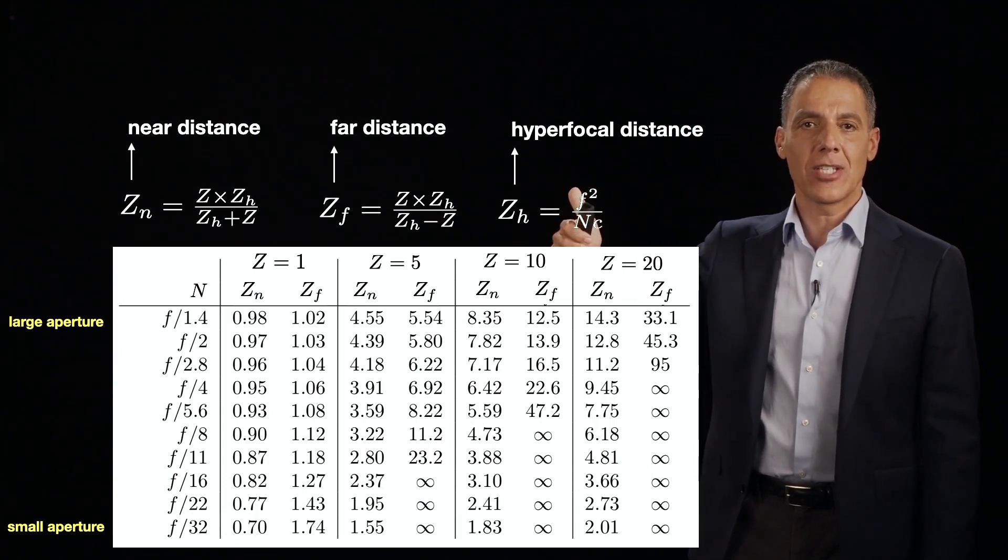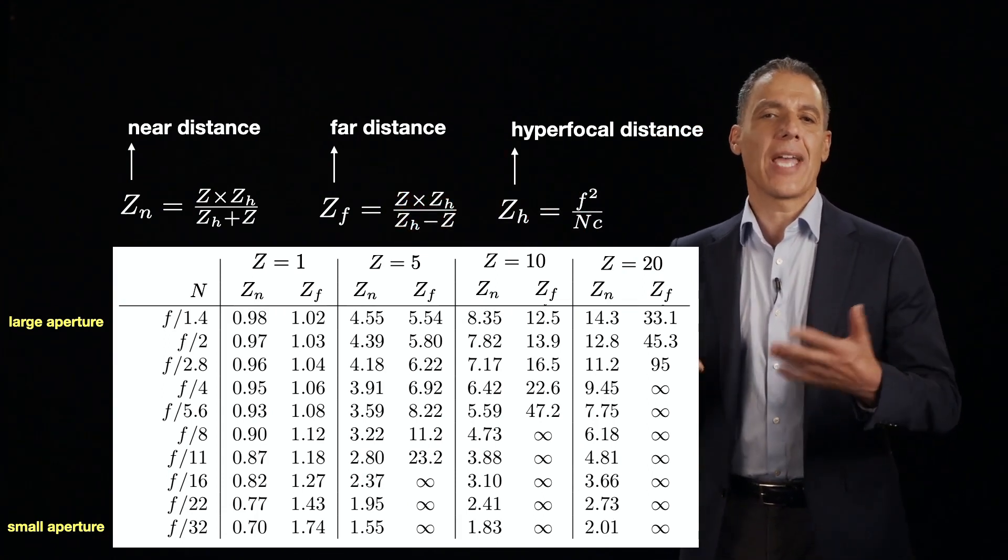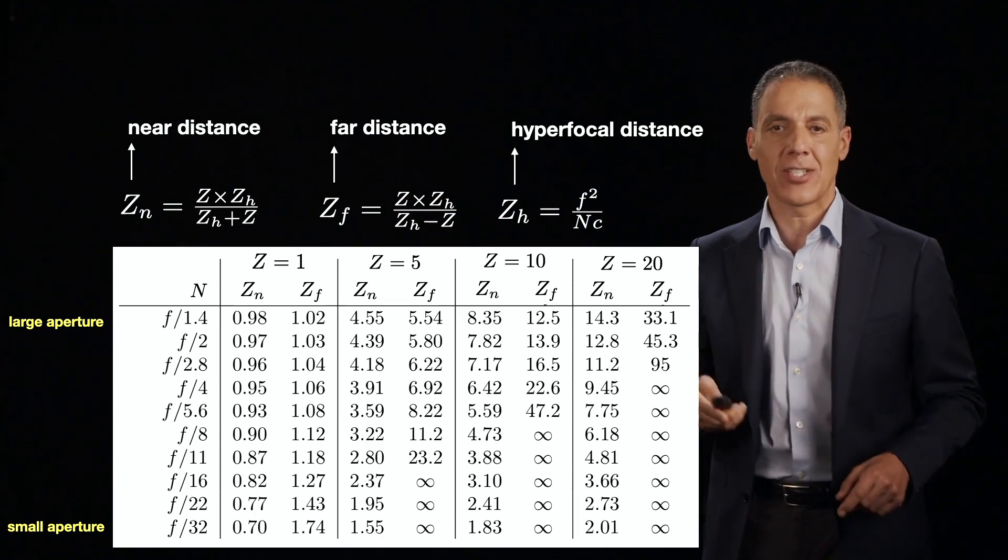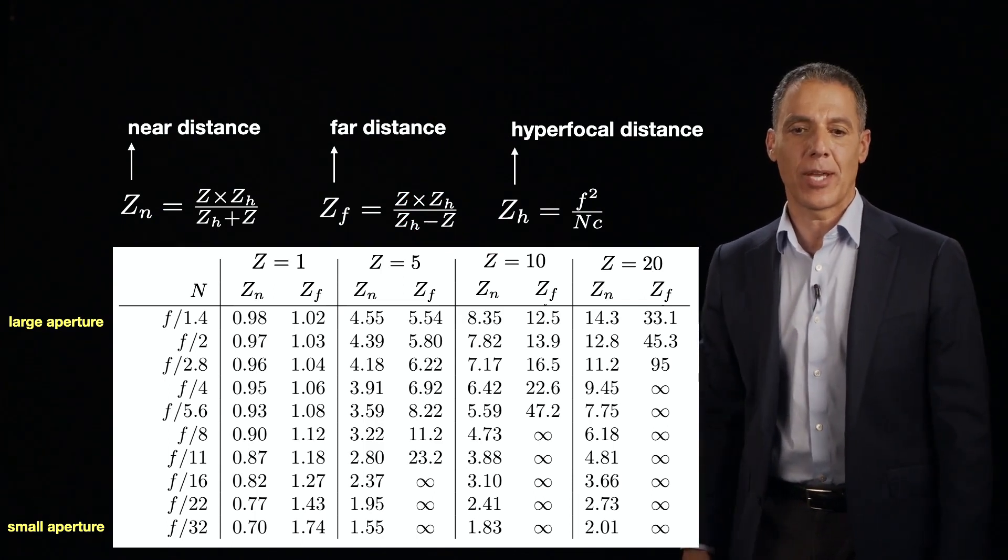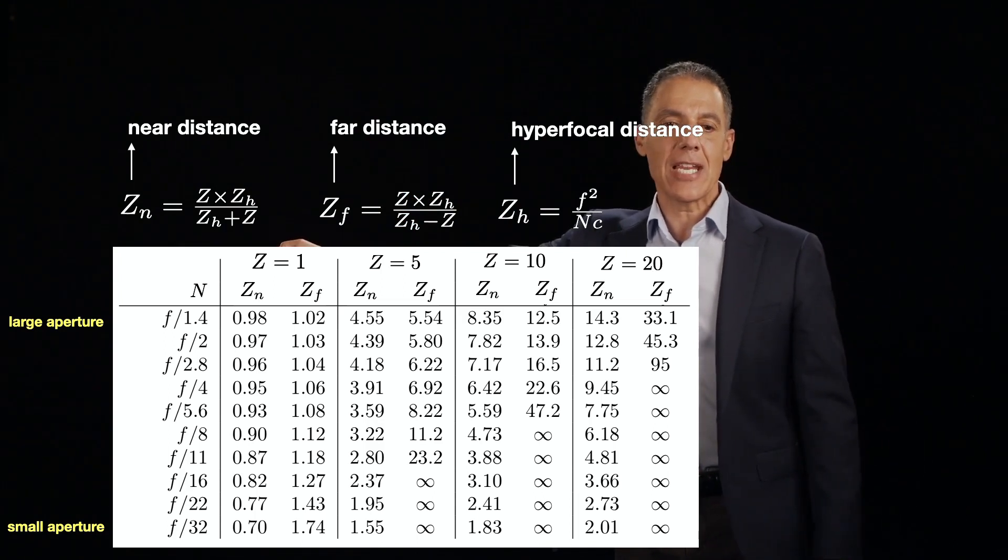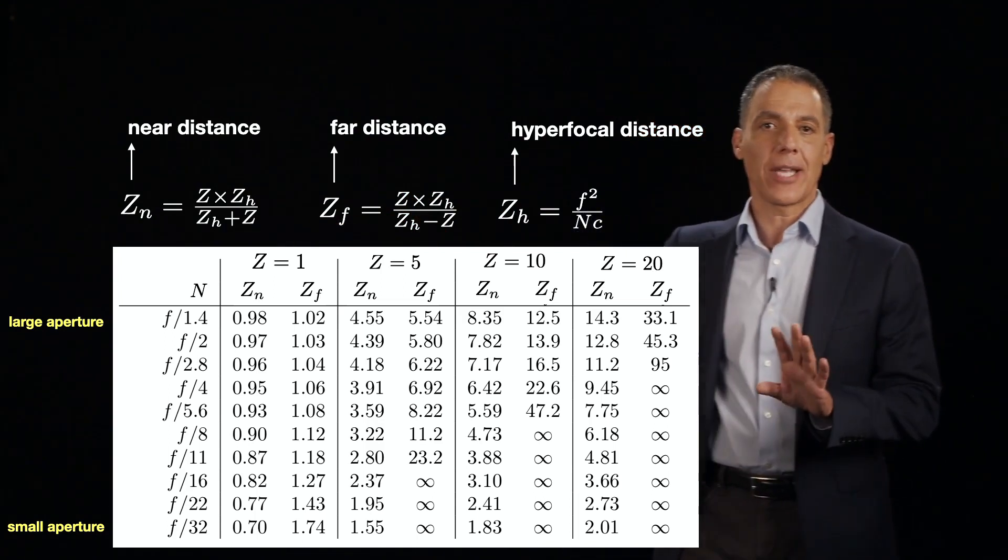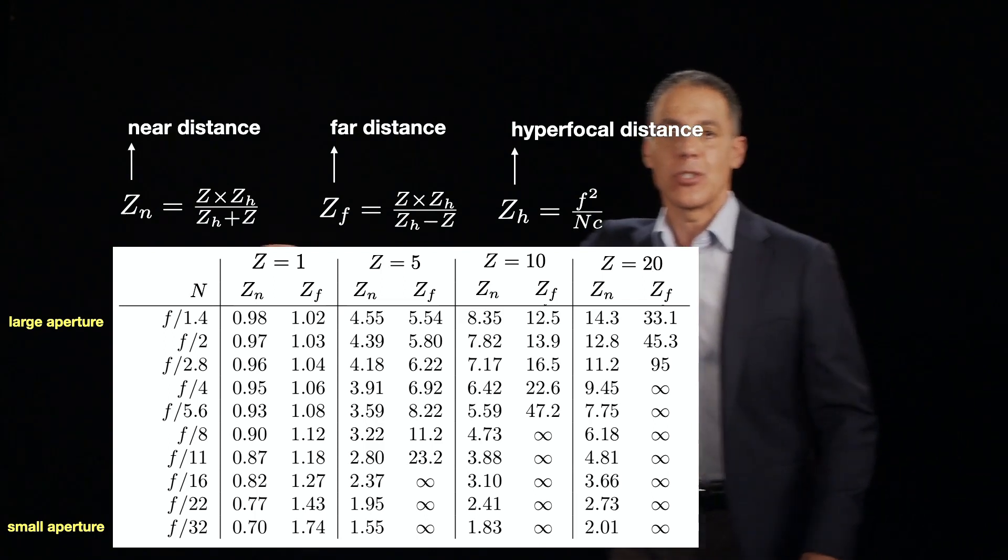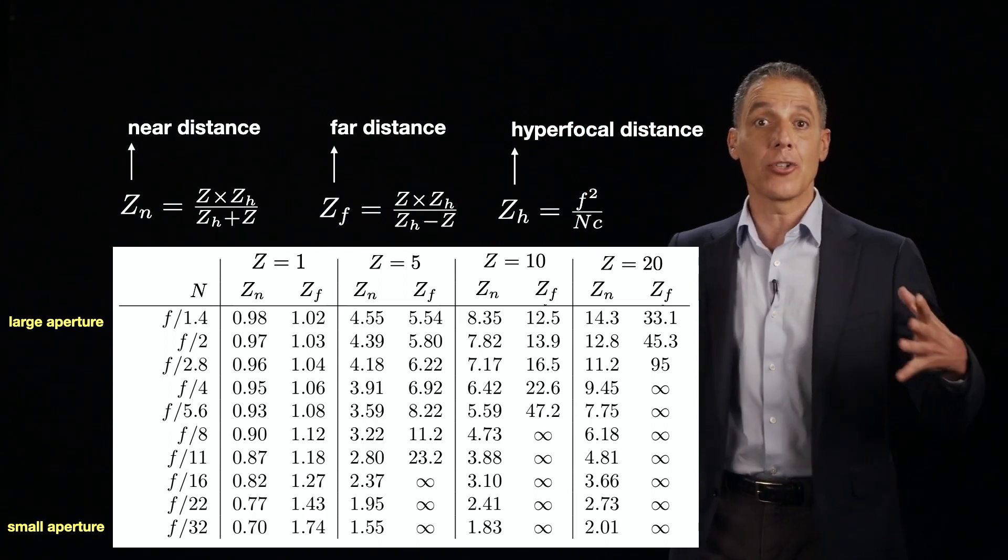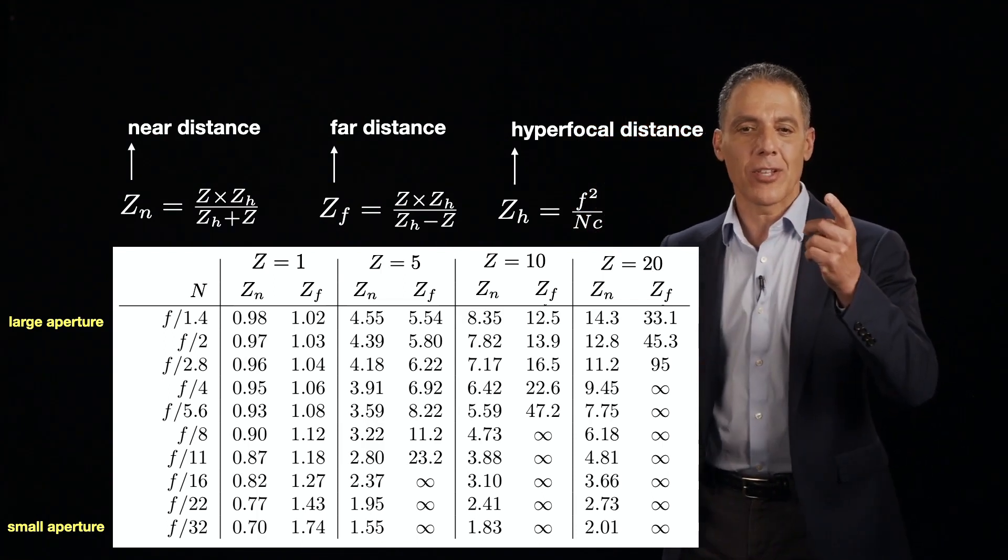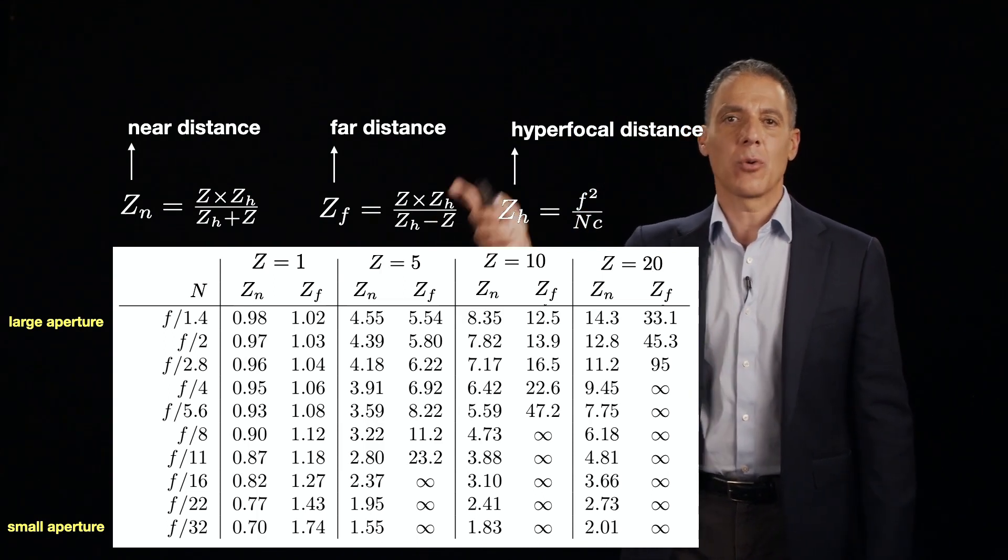So what I'm showing you in each of the columns are for a subject that is at a distance Z equals 1, Z equals 5, Z equals 10, and Z equals 20 for some standard camera, like a 35 millimeter camera with a relatively standard aperture. So I fixed the intrinsic parameters here and I'm going to change now the F-number. So the focal length will stay fixed. I'm going to change the F-number, which you see all the way here from an F over 1.4. This is the standard camera notation means it's a large aperture to an F-number of F over 32, which means it's a small aperture. It's a little confusing, but notice that the number there is in the denominator. So a small number corresponds to a large aperture and a large number corresponds to a small aperture.